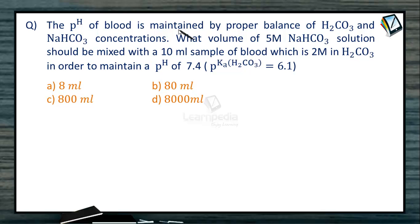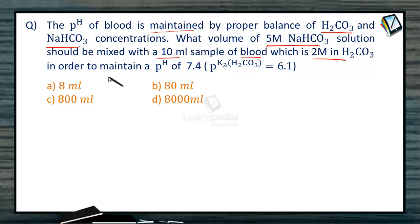The pH of blood is maintained by proper balance of carbonic acid H₂CO₃ and sodium bicarbonate concentrations. What volume of 5 molar sodium bicarbonate solution should be mixed with a 10 ml sample of blood which is 2 molar in carbonic acid, in order to maintain the pH of 7.4? The pKa of carbonic acid is 6.1.